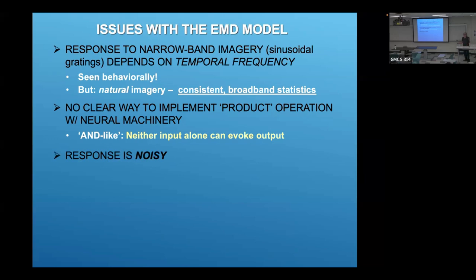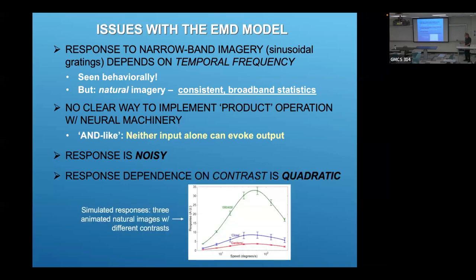The response is noisy - every time a feature or edge goes by this detector there's a big transient, and it really represents speed only in the mean response. Perhaps most significant is the fact that the response depends on the contrast of the image in a quadratic fashion, because this model has a multiplier and it multiplies two signals related to contrast. Simulated responses of an array of this model to animated natural images at different global contrasts show curves that are similar in shape with similar peaks, but very different amplitudes depending on contrast. This is a really ugly feature if you want to extract speed information from this detector.